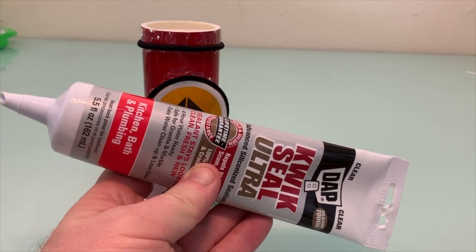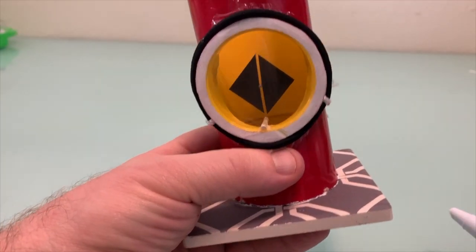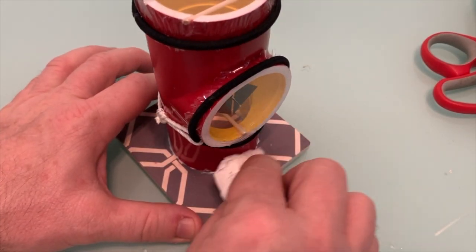Finally, attach the instrument to the base with a little silicon caulking. Your torsion magnetometer is now complete.